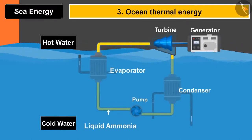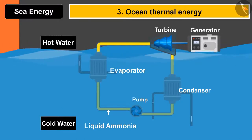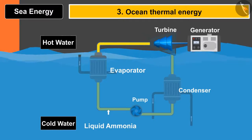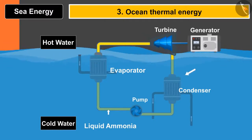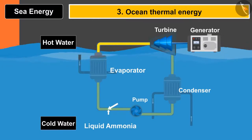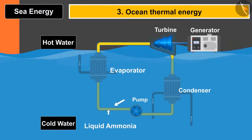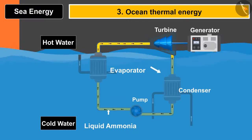In ocean thermal energy, rays from the Sun fall on the ocean and heat the uppermost layer, while the lower layer remains cold. This temperature difference is used to rotate turbine blades. A plant placed in the ocean has an evaporator and condenser filled with liquid ammonia. Ammonia is sensitive to temperature change — when it contacts hot water it converts into vapor and rotates the turbine blades; near the condenser it gets condensed and the cycle repeats.